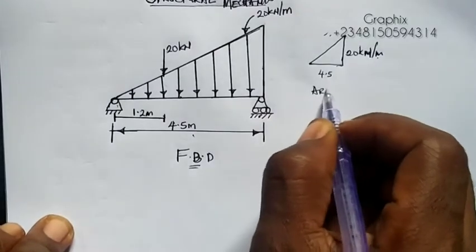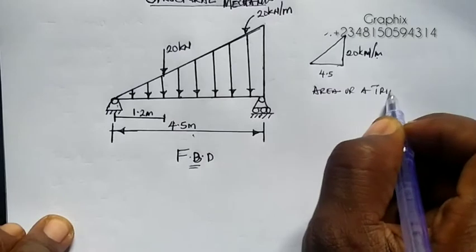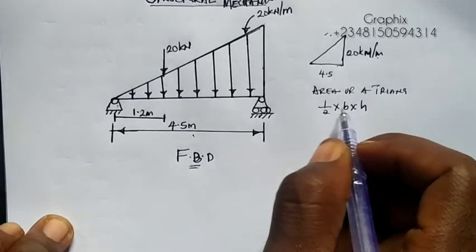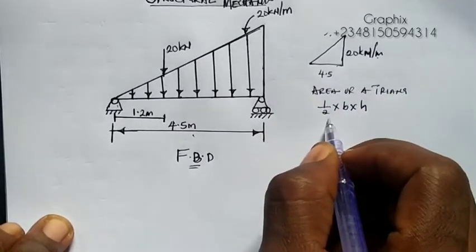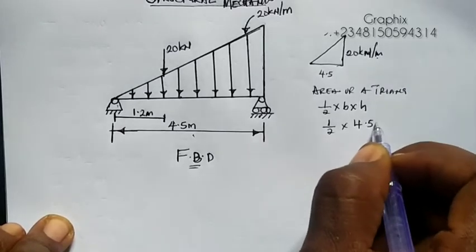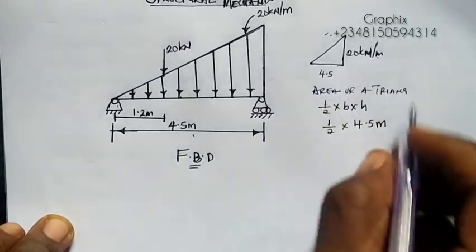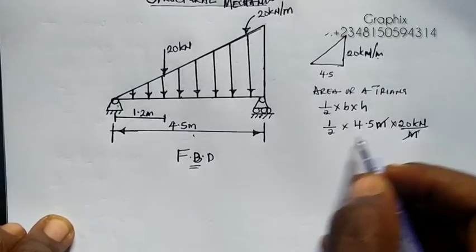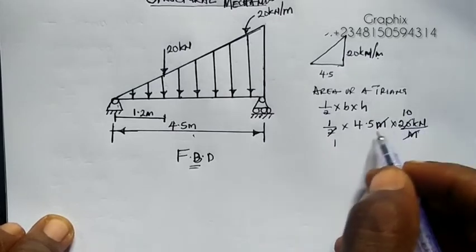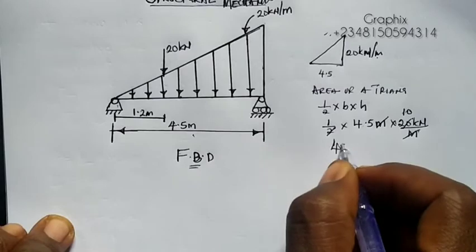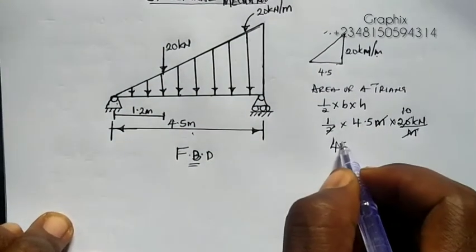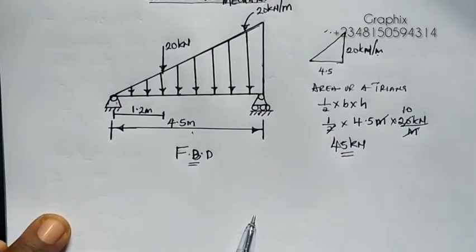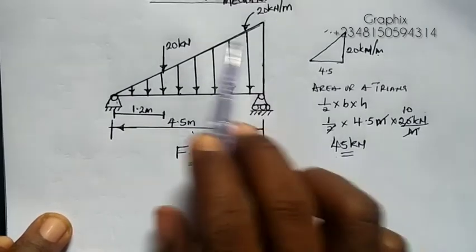The area of a triangle is half base times height. The base of the triangle is 4.5 meters and the height is 20 kN per meter. The meters cancel, so 10 times 4.5 gives you 45 kN. This 45 kN is the force acting on this beam.